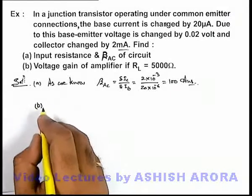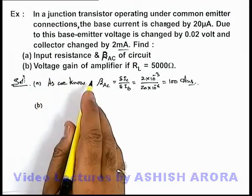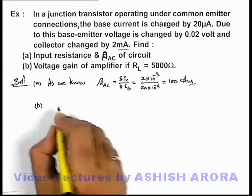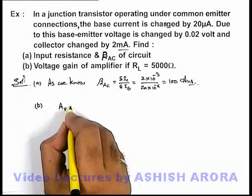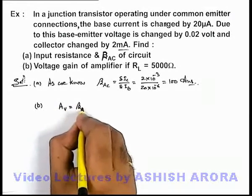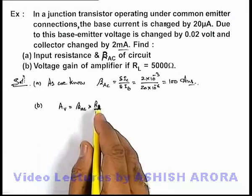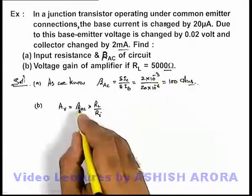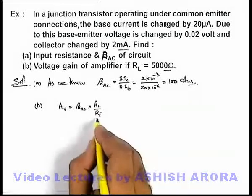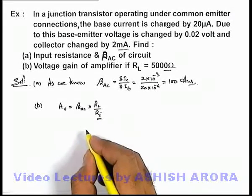And for part B, it is asking the voltage gain of amplifier. We know that voltage gain of amplifier we can write as beta AC multiplied by R_L over R_I, where R_L is the load resistance, beta we are already aware about, and R_I is the input resistance of the circuit.